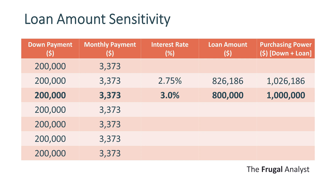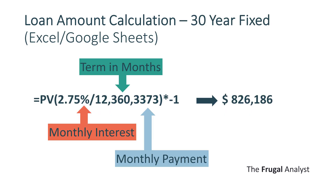With a lower rate like 2.75%, the buyer can afford to get a larger loan with the same monthly payment — that equals $826,000, or $26,000 more than when the rate is at 3%. You can calculate the loan amount using the present value formula in Excel or Google Sheets by inputting the monthly interest, term, and monthly payment.